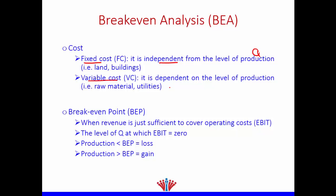The second type of cost is variable cost, and variable cost is dependent on our level of production, which is Q. This means if we produce 10 million units, our variable cost will be high. If we produce less, such as 1 million, our variable cost will decrease. If we produce zero, our variable cost will be zero.